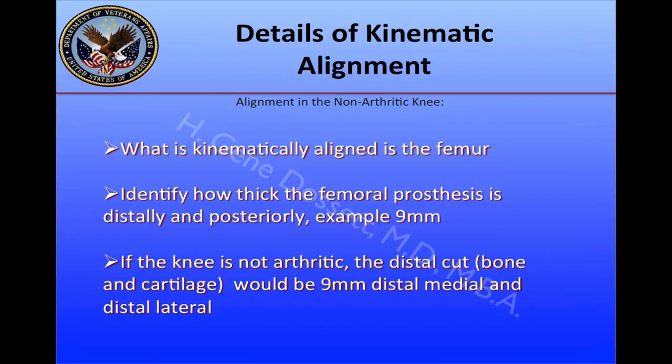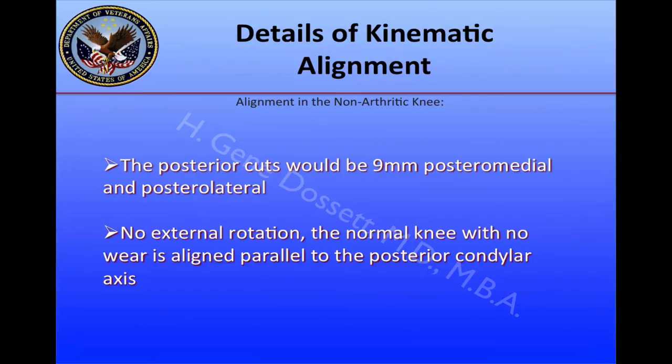The details of kinematic alignment: what is kinematically aligned is the femur. We need to identify how thick the femoral prosthesis is distally and posteriorly — for example, the prosthesis I use is 9 millimeters thick. In a knee that is not arthritic, the distal cut — which includes bone and cartilage — would be 9 millimeters thick to match the articular thickness of the implant. The posterior cuts, posteromedial and posterolateral, would be 9 millimeters, and there would not be external rotation, as the normal knee is aligned parallel to the posterior condylar axis.